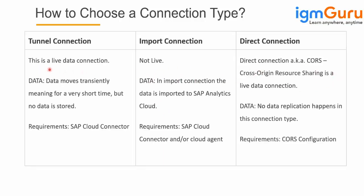To summarize the differences: both tunnel and direct connections are live data connections using the CORS (Cross-Origin Resource Sharing) protocol, while import is not live. For tunnel, data is moved temporarily; for direct, data is not moved at all — no data replication. For tunnel connections, a cloud connector is required; for import connections, both a cloud connector and a cloud agent are needed; for direct live connections, CORS configuration is required.